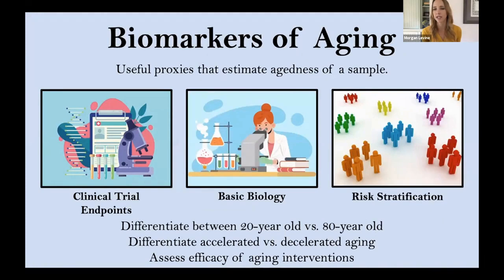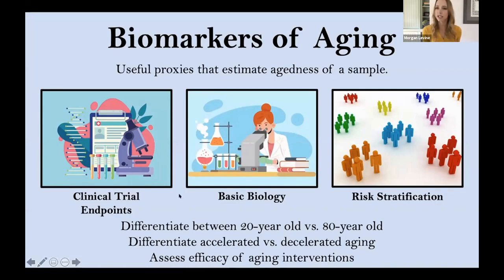Biomarkers of aging are really useful proxies that can be used in a number of different applications. Number one, which we're mostly talking about today, is in clinical trial endpoints. Rather than having to do a clinical trial that lasts 10, 20, potentially 50 years, if we actually did have good proxies for the biological aging of some tissue or cell type, we could use these to represent what we think the mortality or morbidity effect might be.